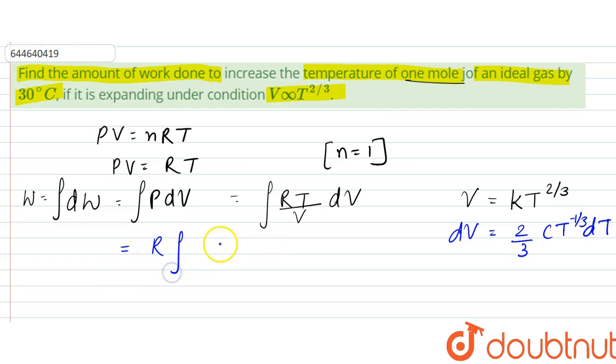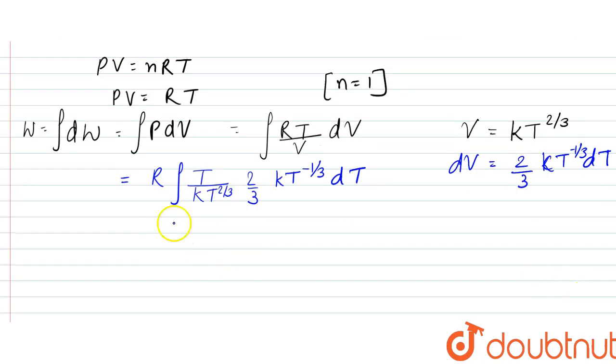R comes out of the integration. Instead of V, we write kT to the power 2/3, into dV, which is 2/3 times kT to the power minus 1/3 dT. From here, this k and this k get cancelled. T to the power 2/3 and T to the power minus 2/3.